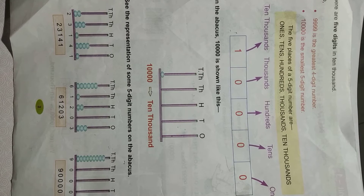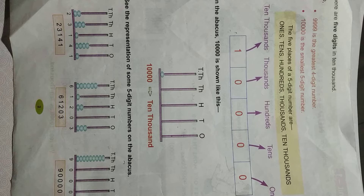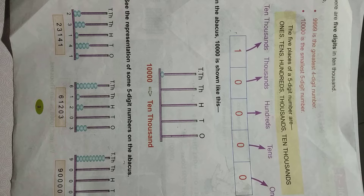On the abacus, 10,000 is shown like this. Now the question is, what is an abacus? An abacus is an instrument with which we can count numbers and understand the place value of each digit in a number.